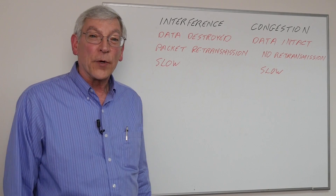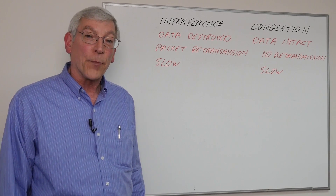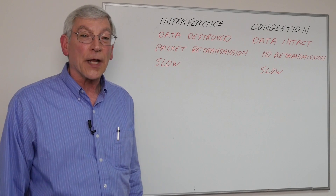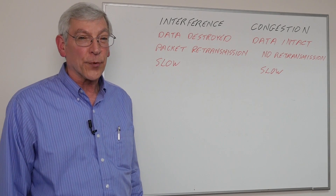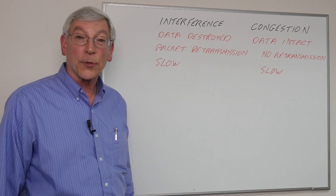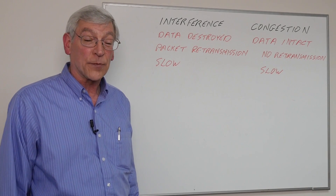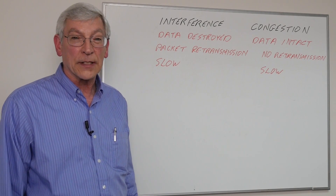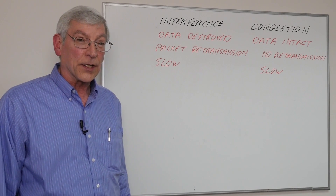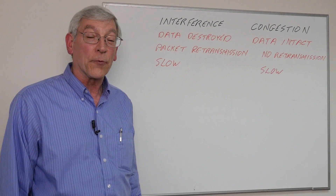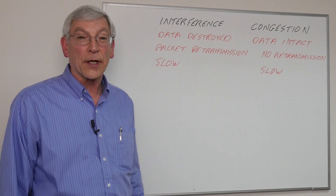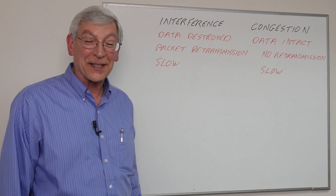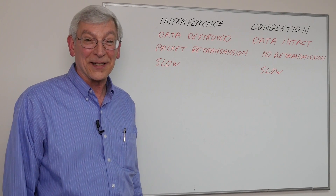To summarize: interference and congestion both cause our network to be slow, but the difference is in how we troubleshoot and solve the problem. Interference problems can be troubleshot and solved with an RF spectrum analyzer as we look at the quality of the RF environment and how it's impacting the data. Congestion problems are troubleshot with different methods — we need to look at our network users and make sure that we have enough capacity to handle all of the data in the system.